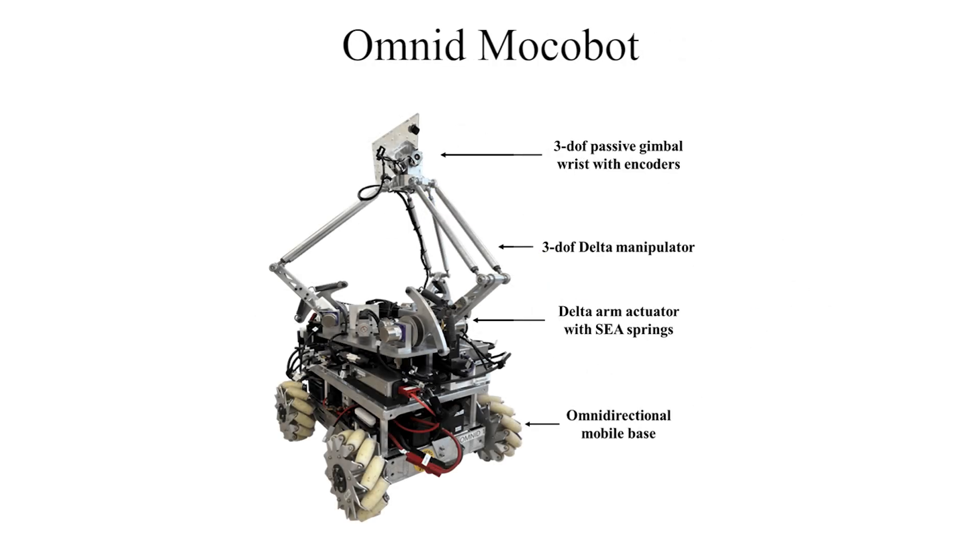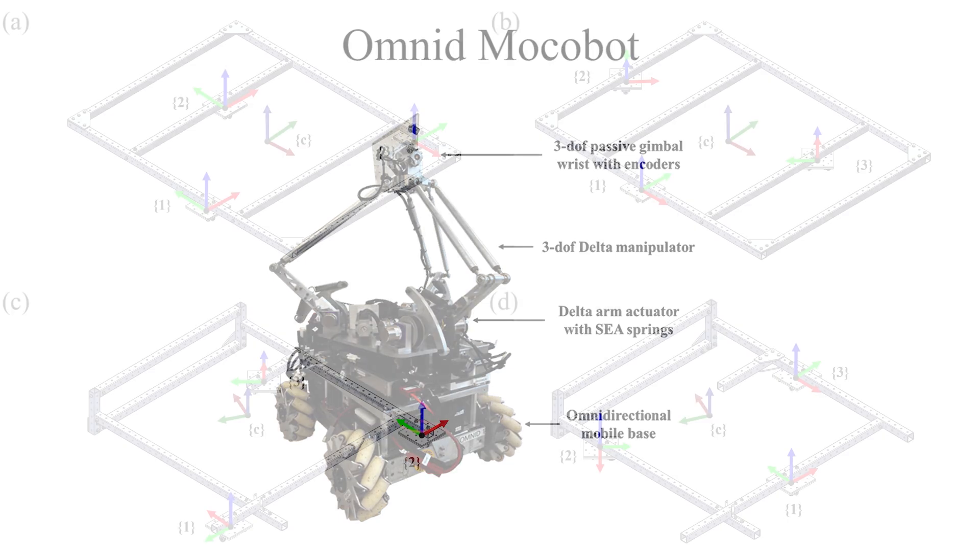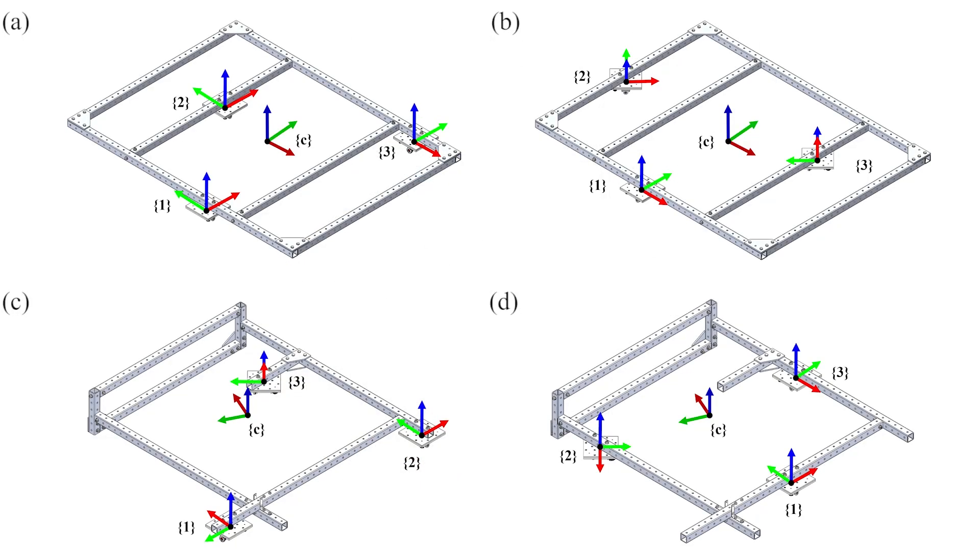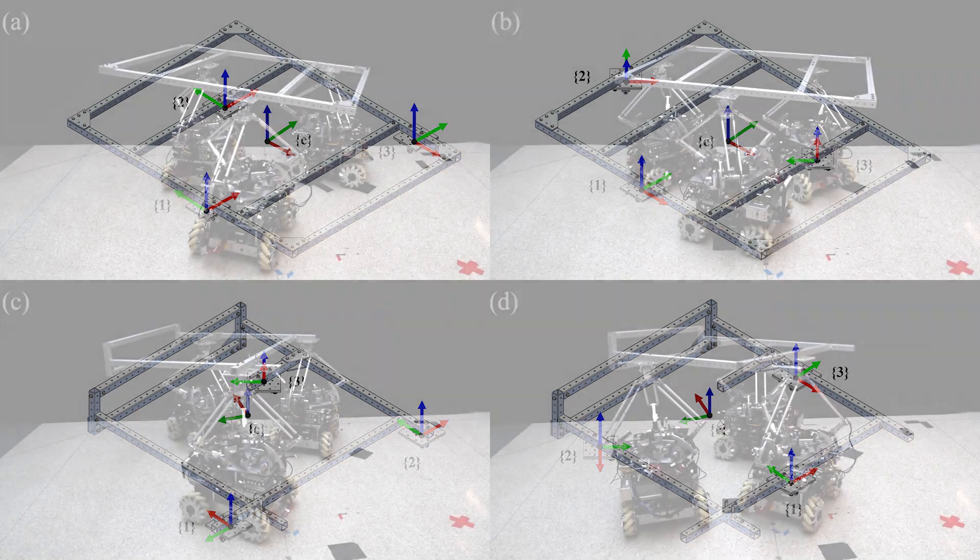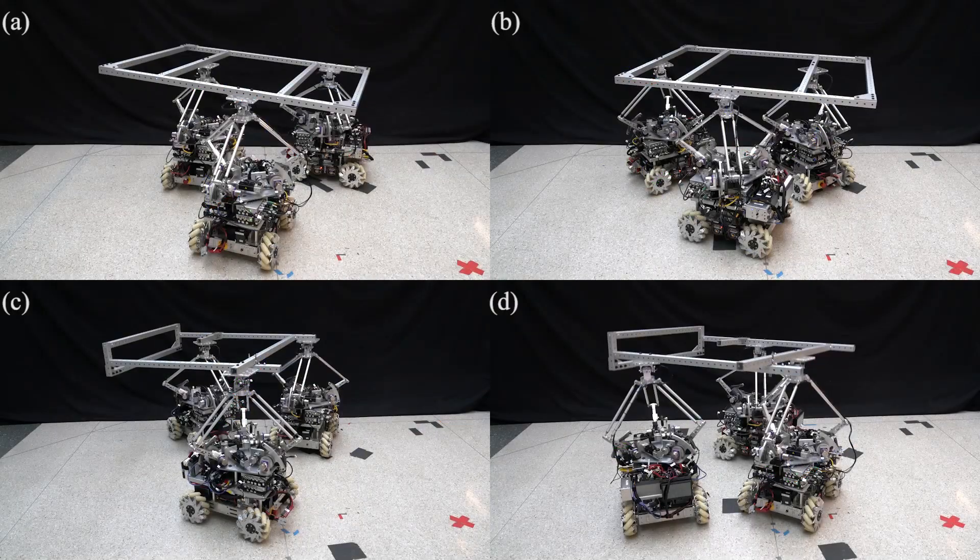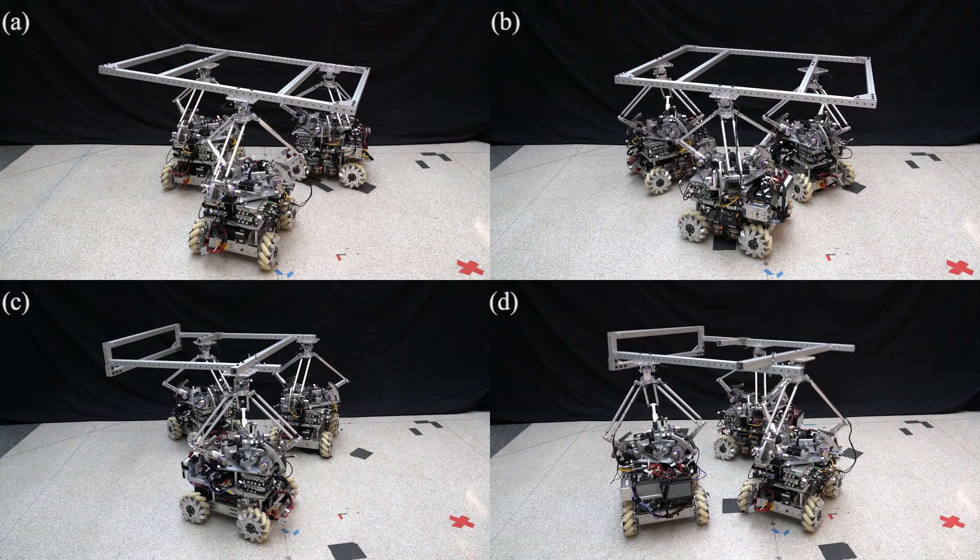We use the Omnid MoCobots with their compliant force-controlled manipulators for experimental validation. Four different payloads were constructed from aluminum extrusion with different grasp locations and inertial properties, shown here being carried by the Omnids.